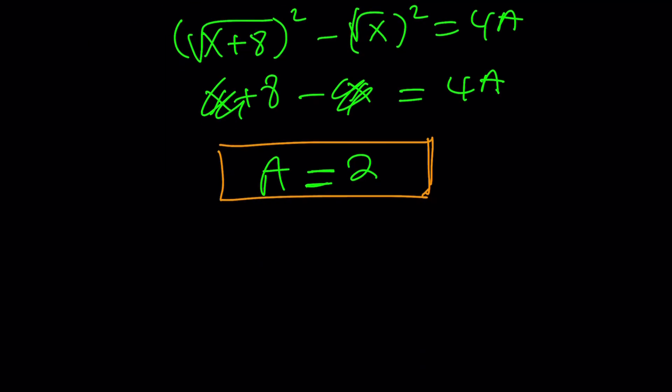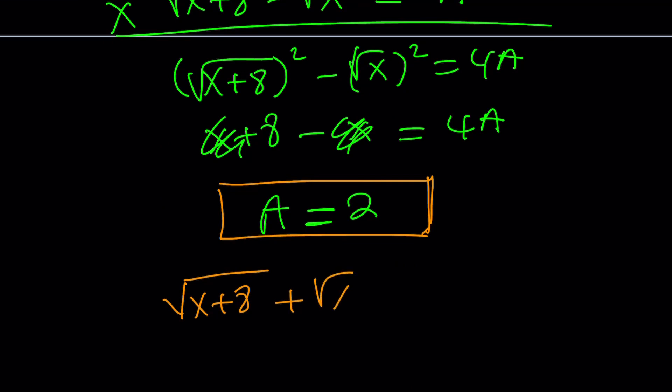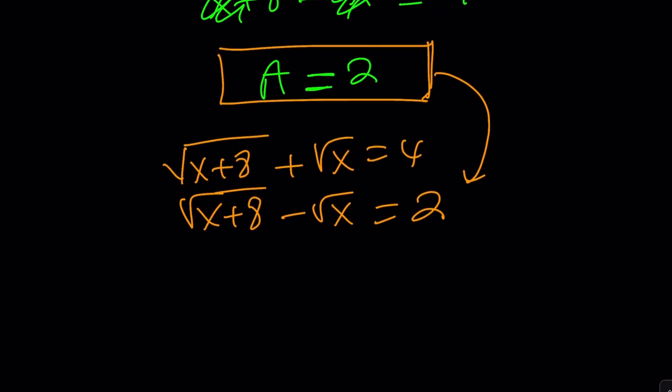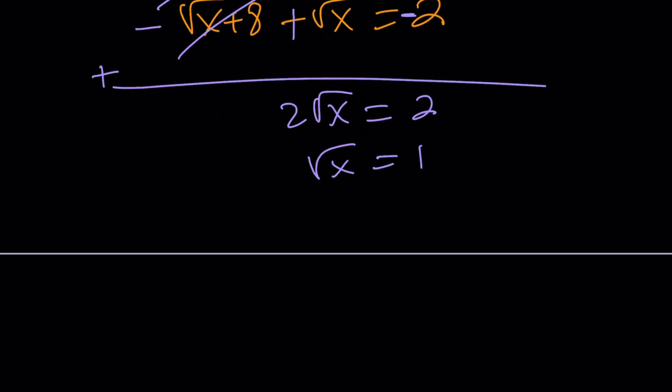But what is A? Let's go back and rewrite our system. Obviously we do know the value of the second expression now. And what I can do is just use this as a system and use elimination. This was A, remember? Now it's 2. So you can definitely use elimination. And if you want to find x directly, I would just subtract these equations. Multiply everything by negative 1 and add, which is equivalent to subtracting. These two are going to cancel out. 2 times the square root of x equals 2. Square root of x equals 1, and that gives you x equals 1.